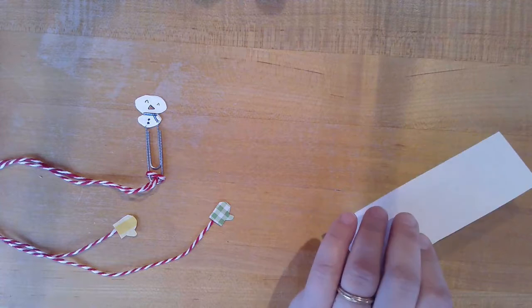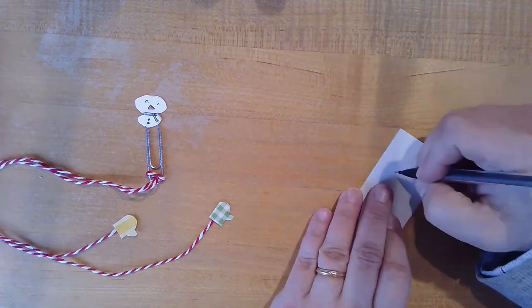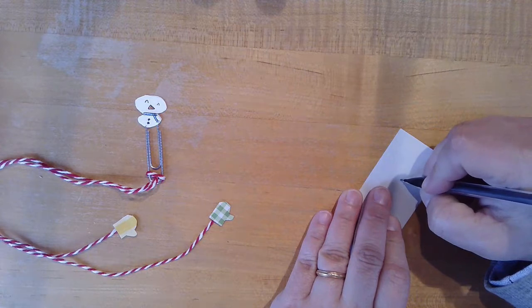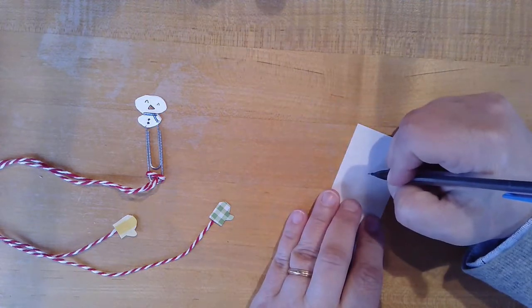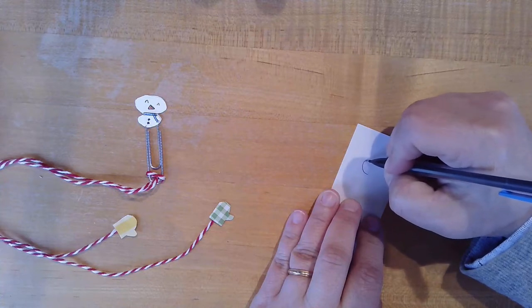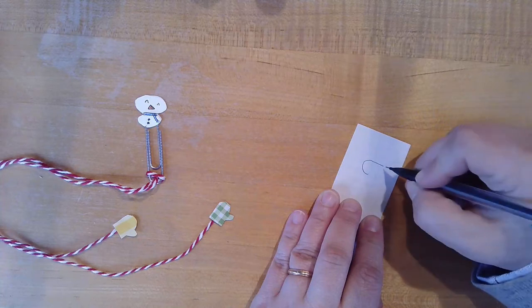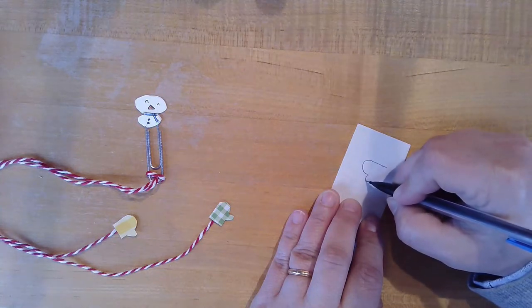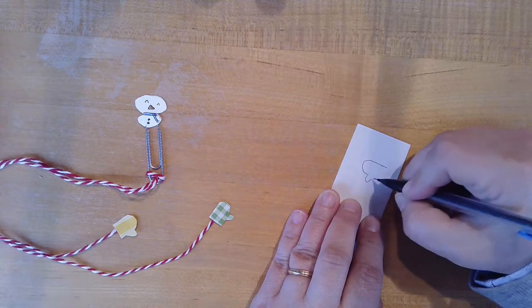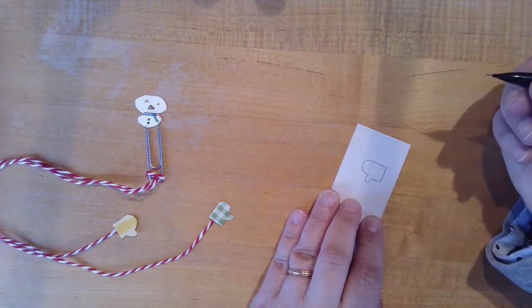All right, for your next step, you are going to draw your mittens. Using the same process as with the snowman, I'm going to draw my mittens on the back of the colored paper. And I just kind of did an oval and a little thumb and then a squared off bottom.